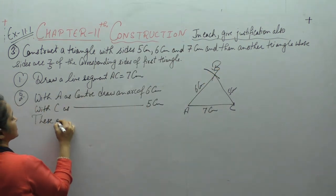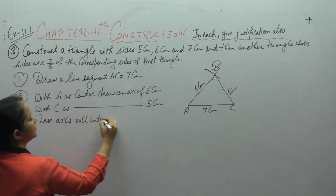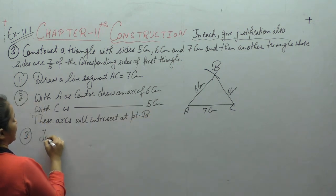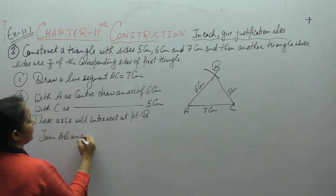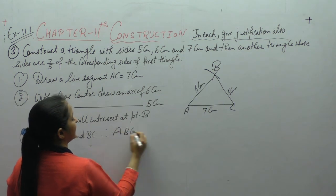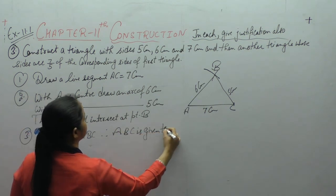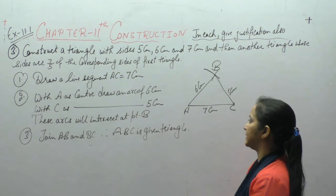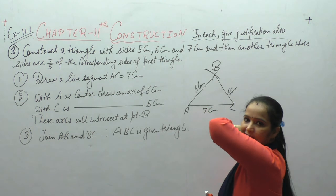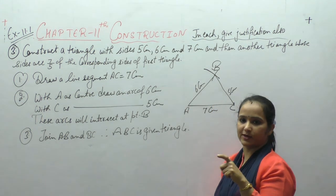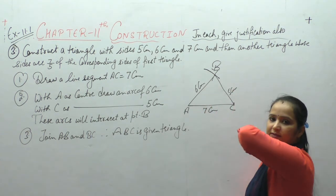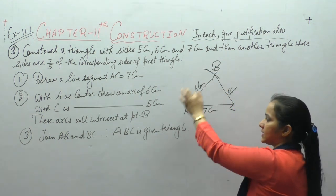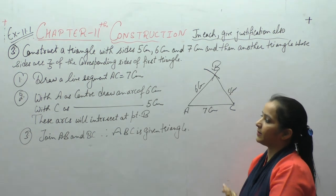These arcs will intersect at point B. Join AB and BC — therefore ABC is the given triangle. यहीं किया हमने: AC 7 cm scale से measure किया, A पे compass रखके 6 cm की आर्क लगाई, C पे रखके 5 cm की आर्क लगाई, दोनों arcs B point पे कट करते हैं, उसे A और C से join किया, तो हमारे पास triangle आ गई।